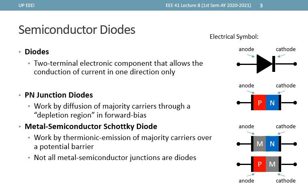Next, we have metal semiconductor diodes, also called Schottky diodes, which work by thermionic emission of majority carriers over a potential barrier at the metal semiconductor interface. In a Schottky diode, the metal and semiconductor can act as either the anode or cathode depending on the semiconductor type. In an N-type Schottky diode, the metal acts as the anode while the N-type material acts as the cathode. Whereas in a P-type Schottky diode, the P-side acts as the anode while the metal acts as the cathode.